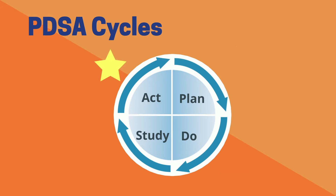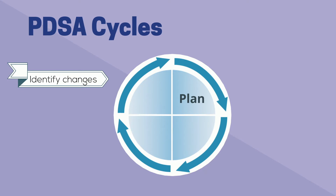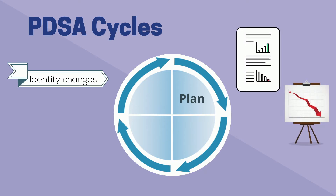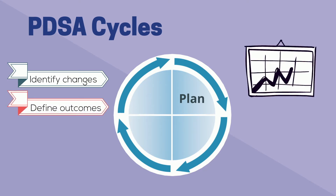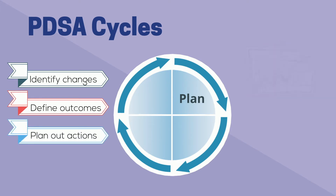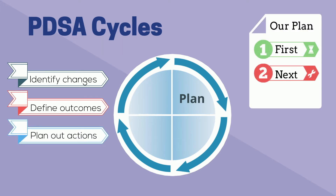The four steps are: plan, do, study, and act. First is plan. During planning, the team identifies changes that are needed using multiple data points, determines outcomes and how success will be measured, and creates action plans.